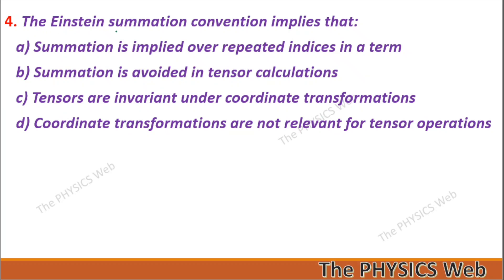Question 4: The Einstein summation convention implies that summation is implied over repeated indices in a term. So A is your correct option.